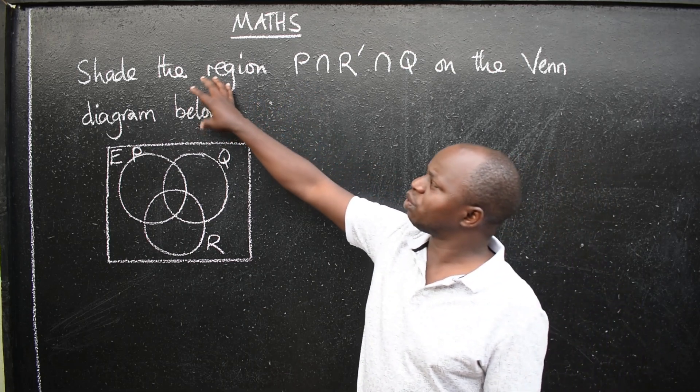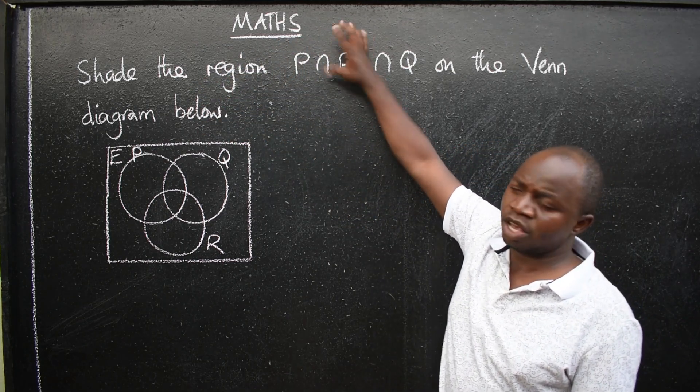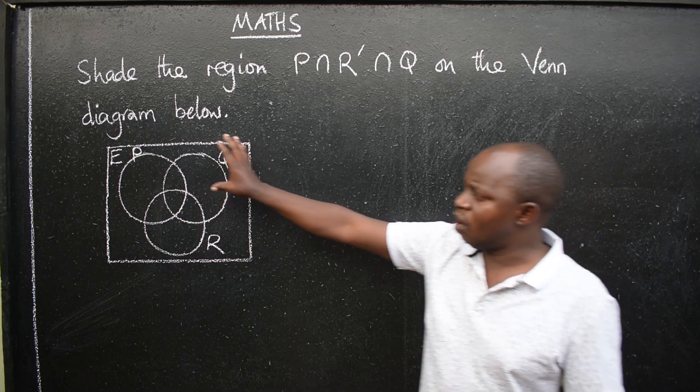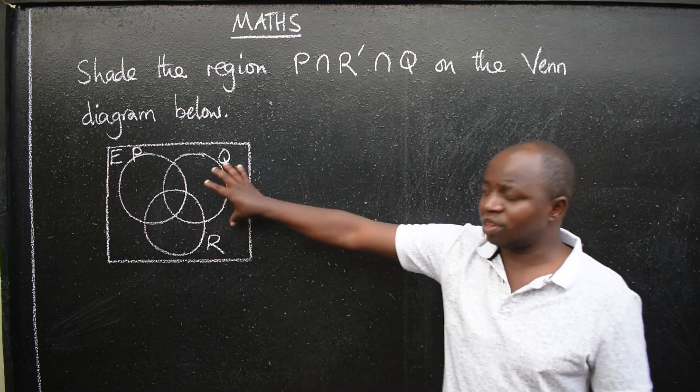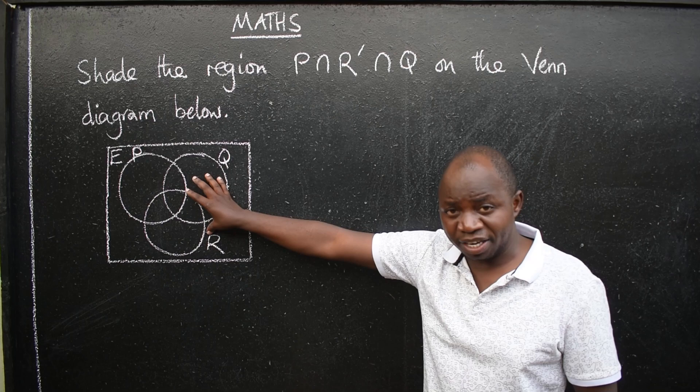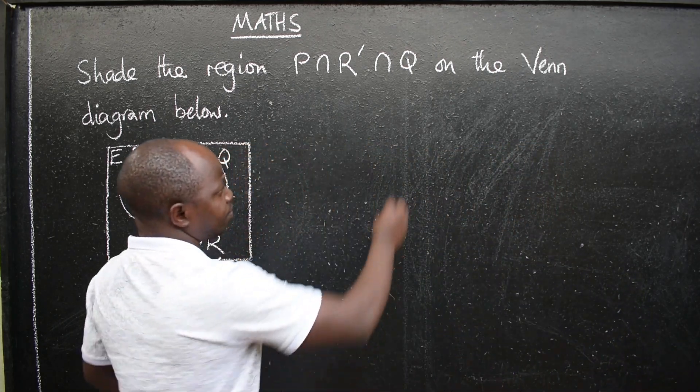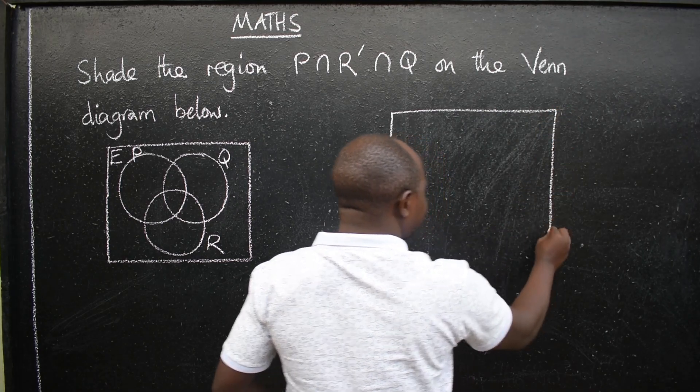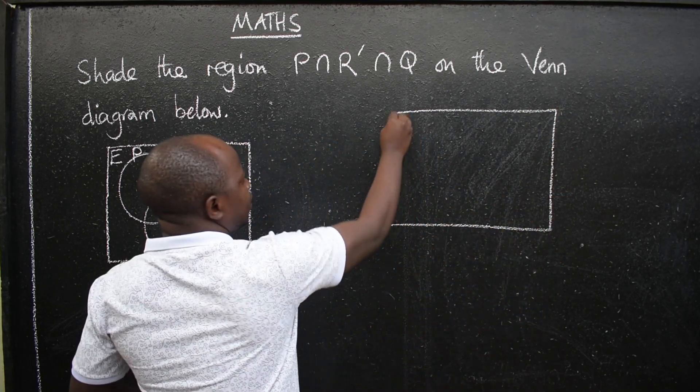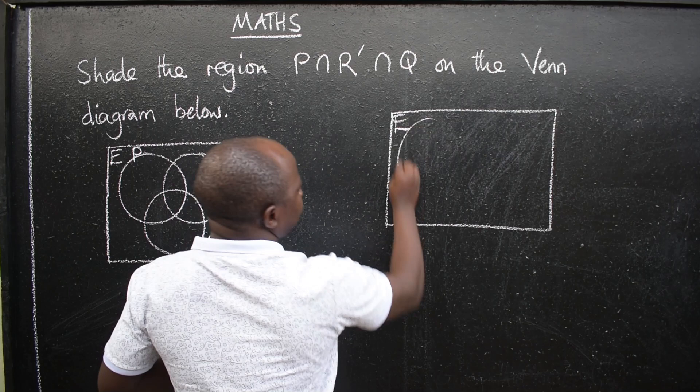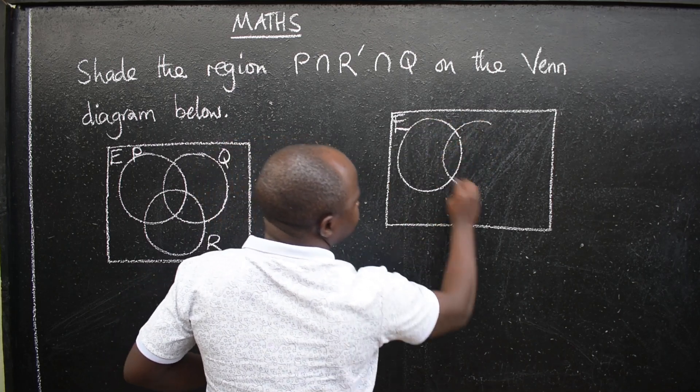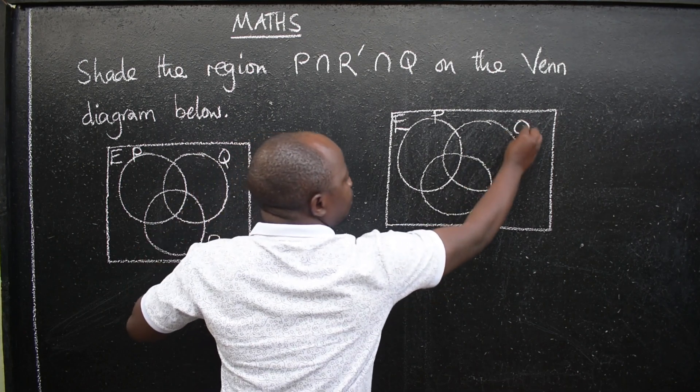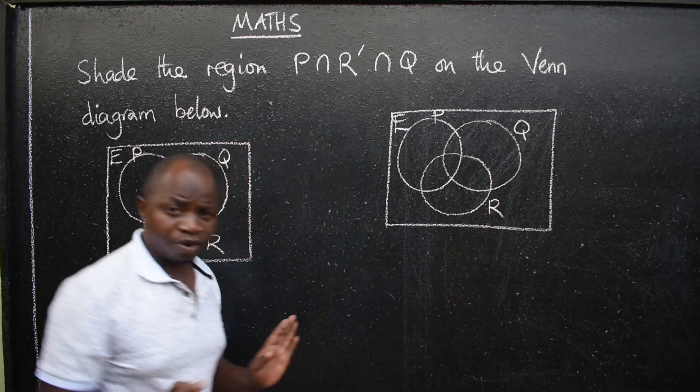So whenever you are told to shade it, what you're supposed to do is to make your own Venn diagram, not the one that has been provided. You make your own Venn diagram. So you come up with a Venn diagram like this. There are supposed to be three sets, which is P, Q and R.